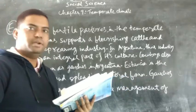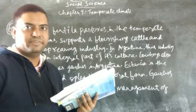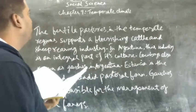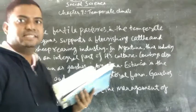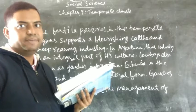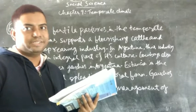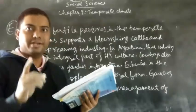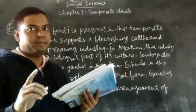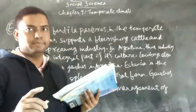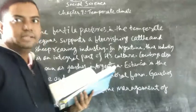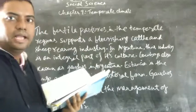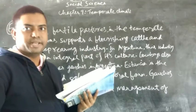So in this lecture we have completed the question and answers, fill in the blanks, etc. of chapter number 9 of social science for standard 5. In our next class we will solve the question and answers of chapter number 11 — chapter number 10 is not included in your second syllabus. So till then, write the answers of this particular chapter in your notebook and study. Thank you.